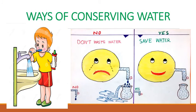Ways of Conserving Water. We can avoid wastage of water in our daily life by adopting the following measures: Turn off the tap after using it. Do not keep the tap running while brushing teeth or washing hands. Use a mug and bucket to take a bath instead of a shower. Water the plants with a bucket and mug instead of a pipe.